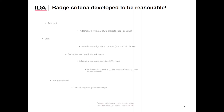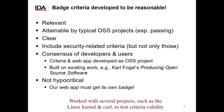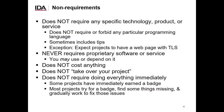It's important to understand that these criteria were specifically developed to be reasonable. We worked with a number of projects to develop and review the criteria to make sure they would work in a variety of circumstances. We don't require any particular technology, product, or service. For example, we don't require or forbid any particular programming language. One exception is that we do expect projects to have a webpage and use TLS to secure webpages, because this provides a widely used standard and secure way to get basic information. We never require proprietary software or proprietary service, though projects may choose to use them.